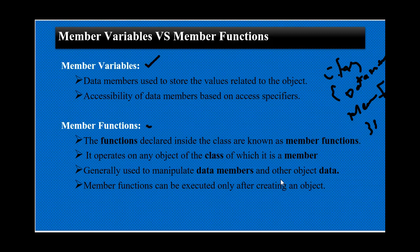अब हम बात करते हैं member function की। Objects की two properties होती हैं — एक उसके functions होते हैं और दूसरा उसकी characteristics। अगर functions की बात करें तो, example लेते हैं person object की — person खाता भी है, पीता भी है, चलता भी है। अब हमने data member के through उसकी values store करवा ली हैं — उसकी age, नाम, weight — जो भी required थी। अब data members को access करने के लिए हम function define करते हैं।